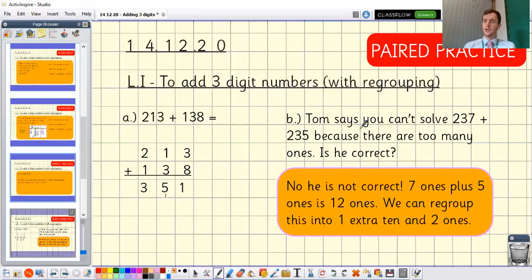Next one. Tom is not correct. We can do seven ones plus five ones which is 12 ones but we just need to do some regrouping afterwards so we can regroup this into one extra ten and two ones. So well done if you had a similar thought or a similar explanation to explain that to Tom because we can definitely still solve that.